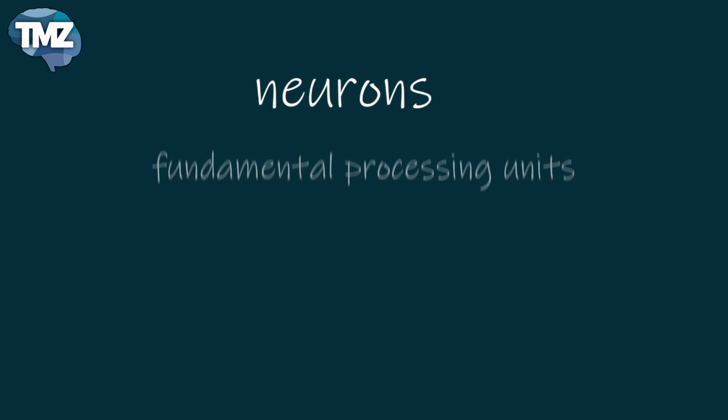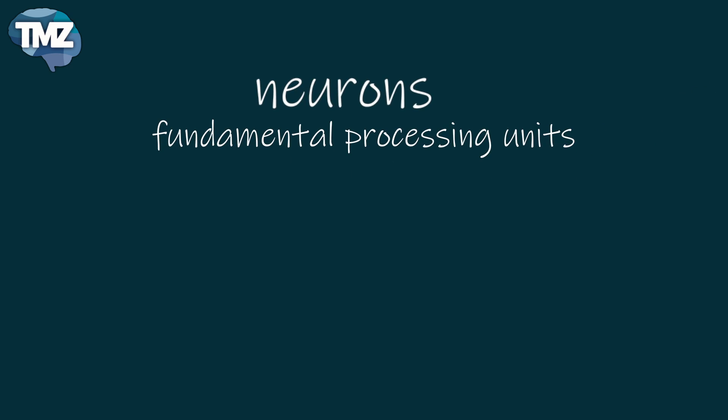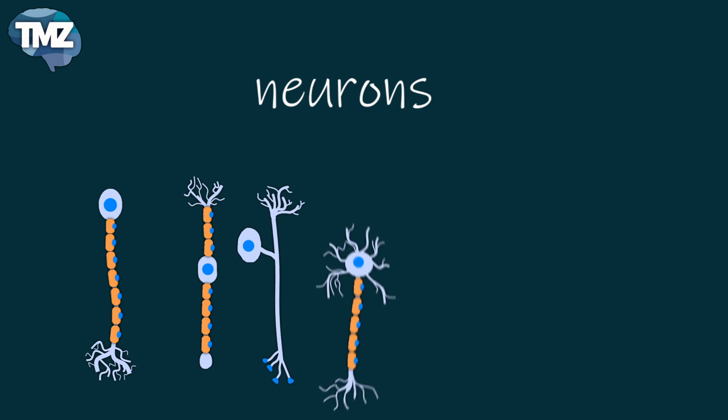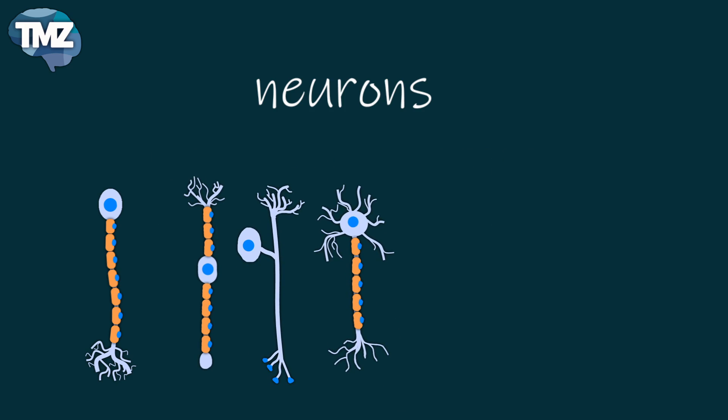Neurons really form the fundamental processing unit of the central nervous system. There are different types of neurons — they have many different properties, many different shapes and sizes, and also many different functions.